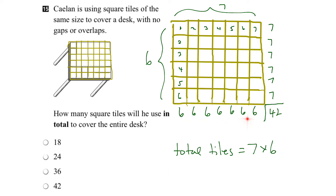So 7 groups of 6, or 6 groups of 7, means 7 times 6, which as we found out equals 42. Looking down our list of options, the last one is the right answer. And there you go.